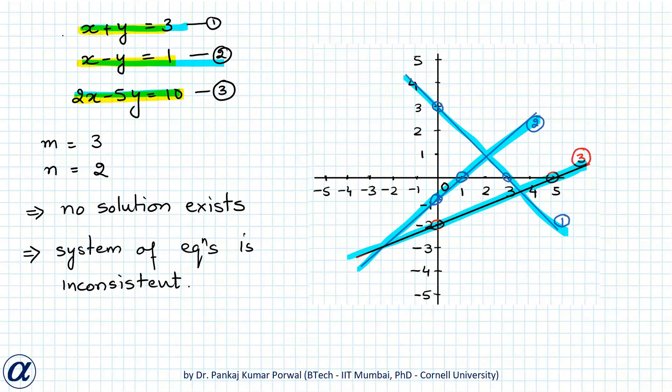In this case all three equations are linearly independent, so the number of linearly independent equations is more than the number of unknowns, and therefore the system is inconsistent.